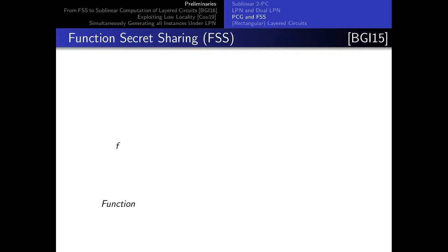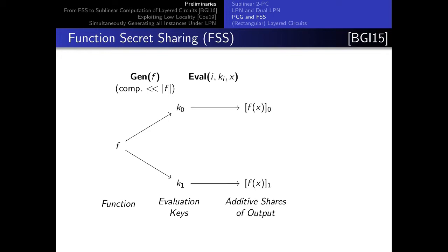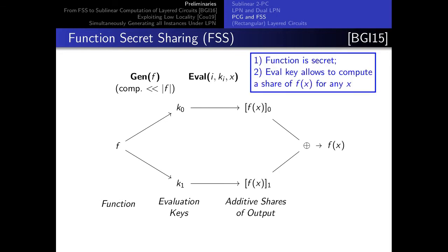This specific PCG allows us to build our second primitive: function secret sharing. Given a function, we want to derive a pair of evaluation keys which can be used to generate additive shares of the evaluation at any point. An important requirement is that the function be kept secret — if you're only given one of the evaluation keys, k0 or k1, you shouldn't learn what the function is. Function secret sharing is defined with respect to a function class, and in this case we're interested in FSS for the class of all depth d circuits.